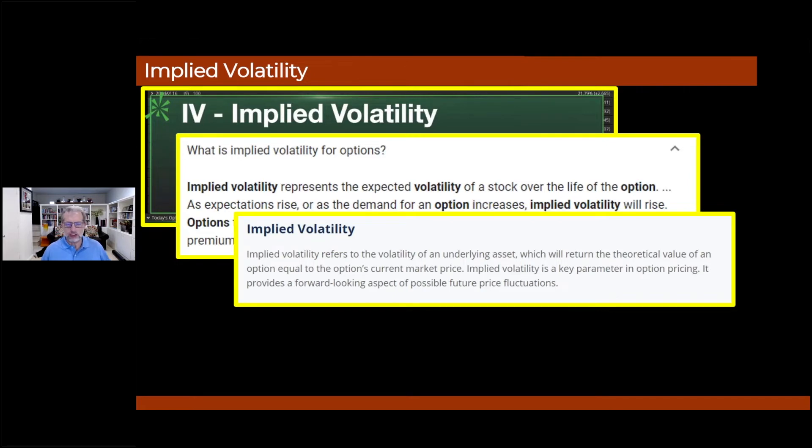Let's go one more. Implied volatility, and I pulled these off the net, just lots of random places right off the internet. Implied volatility refers to the volatility of an underlying asset - notice how they use volatility in the definition? Hard for me - which will return the theoretical value of an option equal to the option's current market price. Here's the key on this one: implied volatility is a key parameter in option pricing. It provides a forward-looking aspect of possible future price fluctuations.